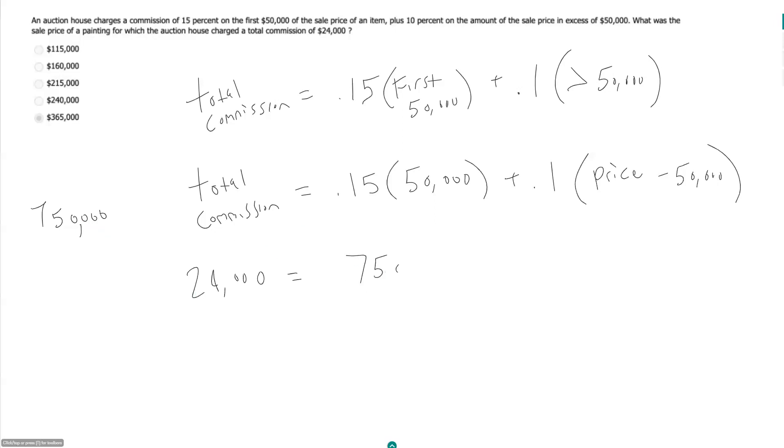So 7,500 plus 0.1p, that's what we're solving for, minus 10% of 50,000, which should just be 5,000. So what do we have now? 24,000 equals 7,500 minus 5,000 is 2,500 plus 0.1p.